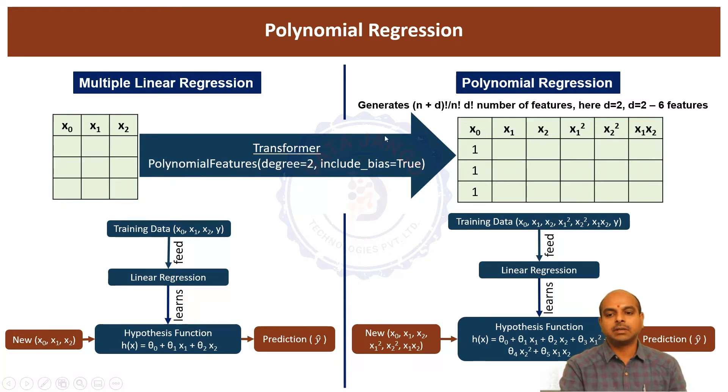The polynomial features, when you pass an n column data set, n feature data set, and wanted to raise it to d degree, it is going to create n plus d factorial by n factorial into d factorial number of columns. Here the data set has got 2 columns, right? n is equal to 2. The degree we are trying to raise it to is 2. 2 plus 2, 4 factorial divided by 2 factorial into 2 factorial. 4 factorial is 4 into 3 into 2 factorial divided by 2 factorial. One 2 factorial gets cancelled, and there is 3 into 4, 12 divided by 2 is 6 features.